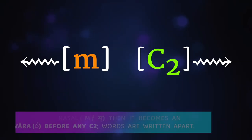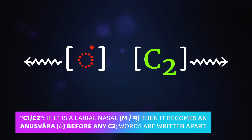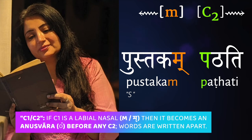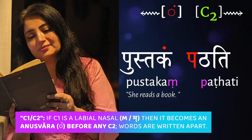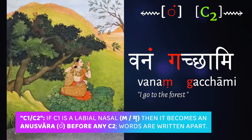Here's a really easy rule to lighten things up. In the C1-C2 situation, when C1 is a ma-kara — an m — it turns into the anusvāra, the dot on top of the last syllable, no matter what C2 is. So pustakam paṭhati, she reads a book, becomes pustakaṃ paṭhati with an anusvāra. Vanaṃ gacchāmi, I go to the forest, becomes vanaṃ gacchāmi — the m turns into that dot, a nasalized vowel sound.